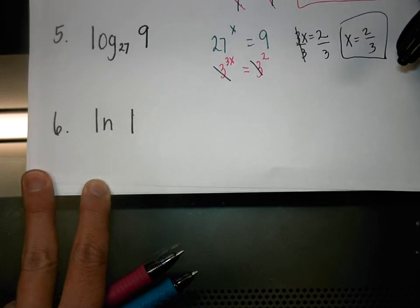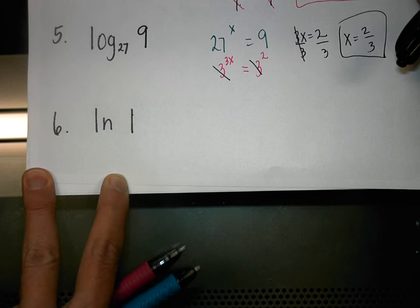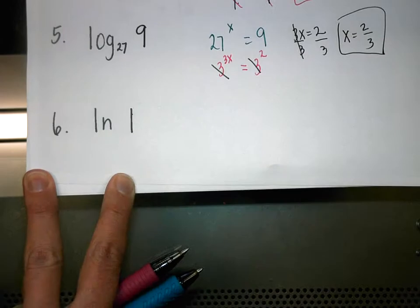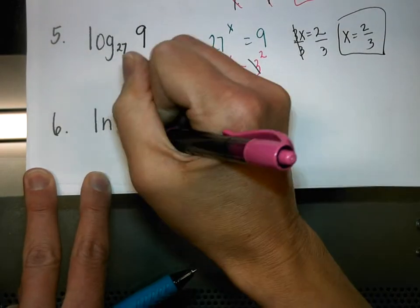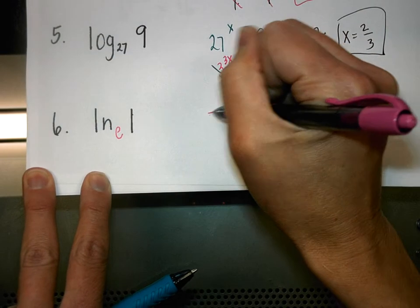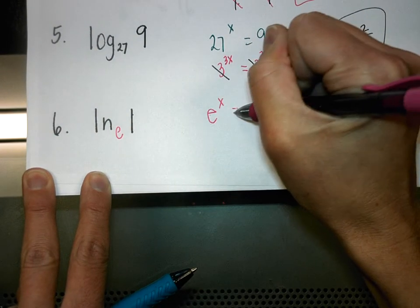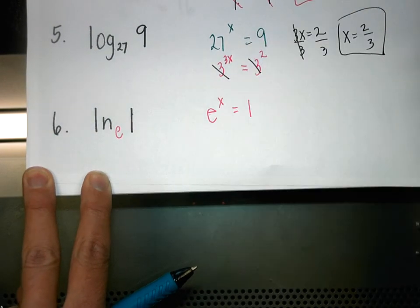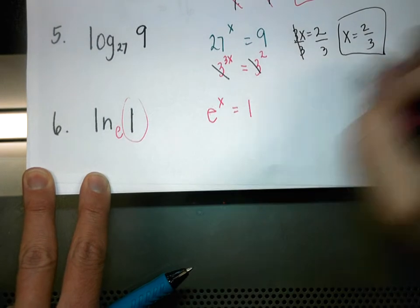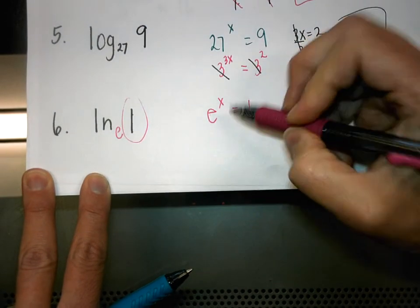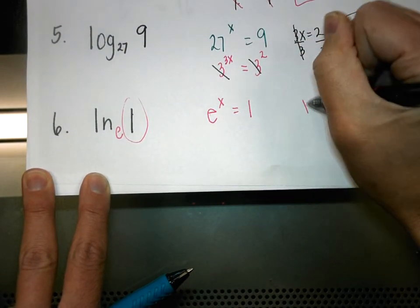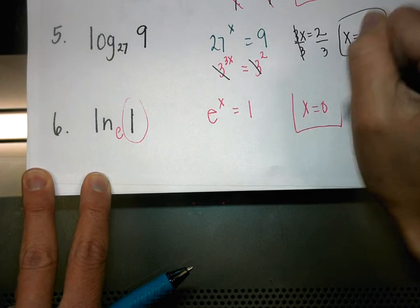Number 6: Natural log is always base E, so this is saying E to what power equals 1. Any time we have a 1 in this spot the answer is 0, because anything to the 0 power gives us 1. So X equals 0.